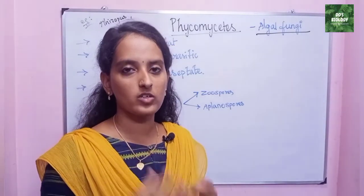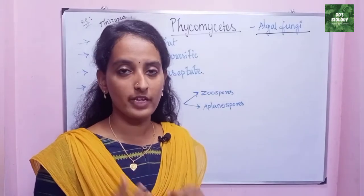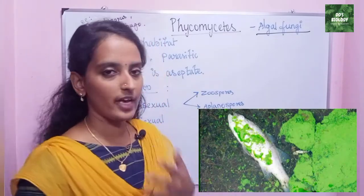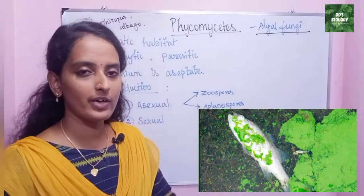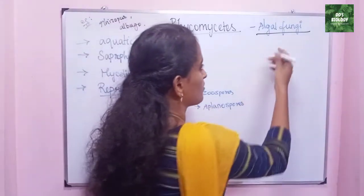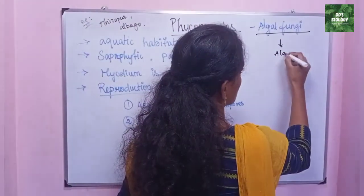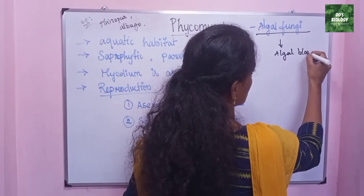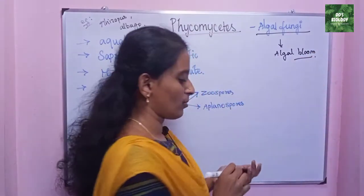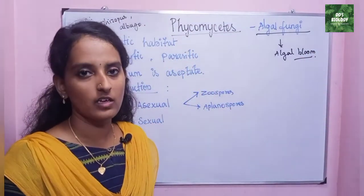There is not enough oxygen, and it is not light penetration — it is also a death. So it is very dangerous for aquatic organisms. It is an algae bloom form and it is very dangerous.